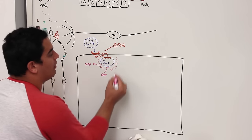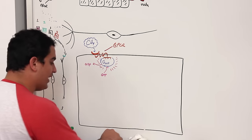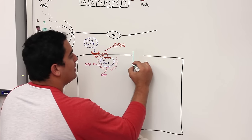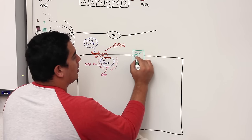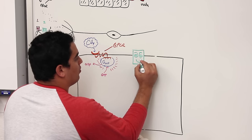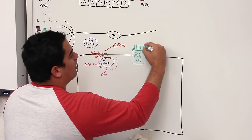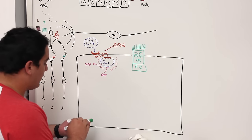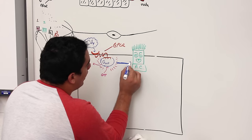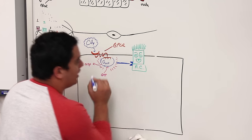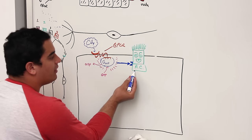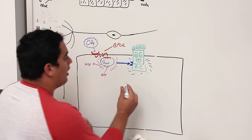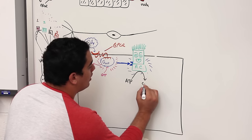When the G olfactory protein becomes super active, it moves forward and activates a special enzyme located on the cell membrane — this enzyme is called adenylate cyclase (AC). The G olfactory protein comes over and binds onto a specific site on adenylate cyclase, activating it.